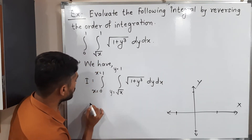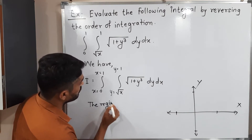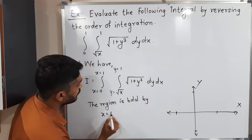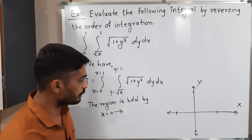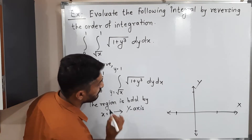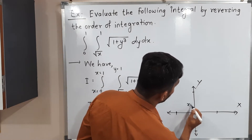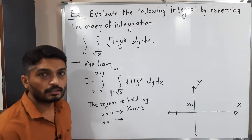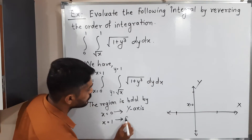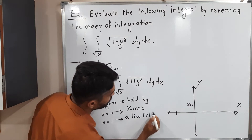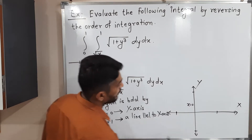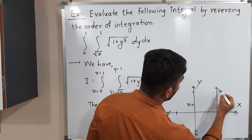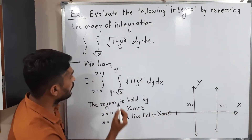The region is bounded by the following curves. We have x = 0, which is the equation of the y-axis. Next, x = 1, which is a line parallel to the y-axis passing through x = 1. I'm drawing that line here.